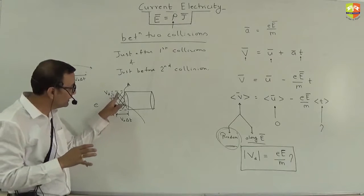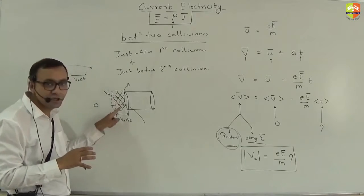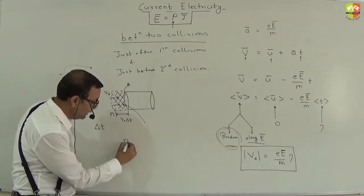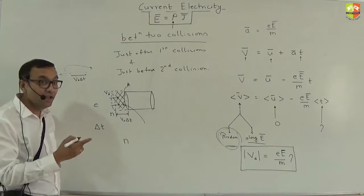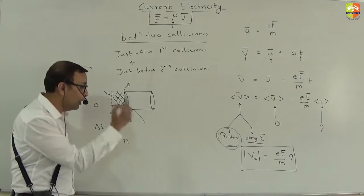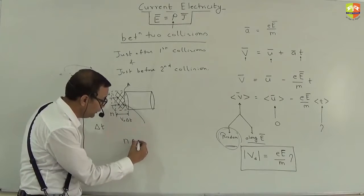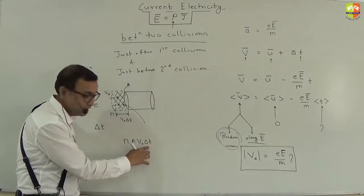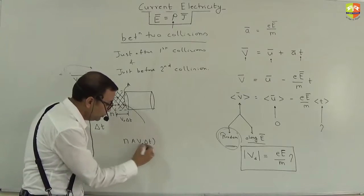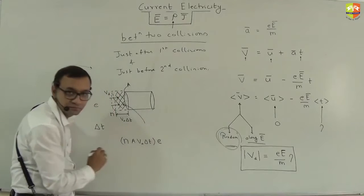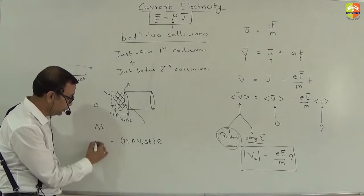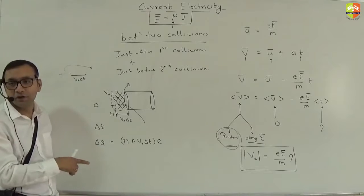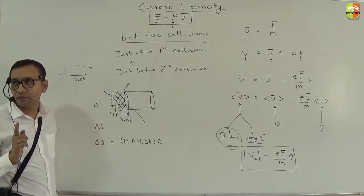How many free electrons are in the shaded zone? n (free electrons per unit volume) × volume of that zone = n × A × v_d × δt. Multiply by charge e to get the total charge that has flowed in δt time: ΔQ = n × e × A × v_d × δt.